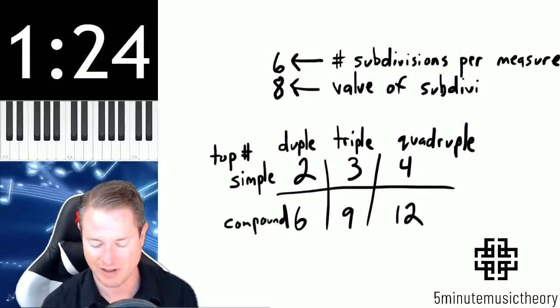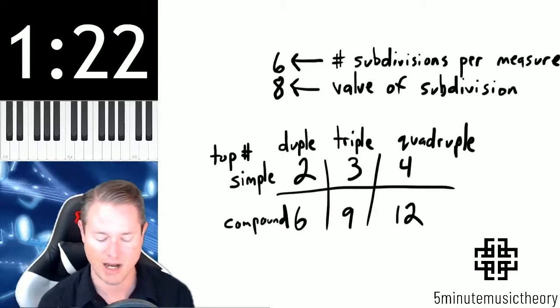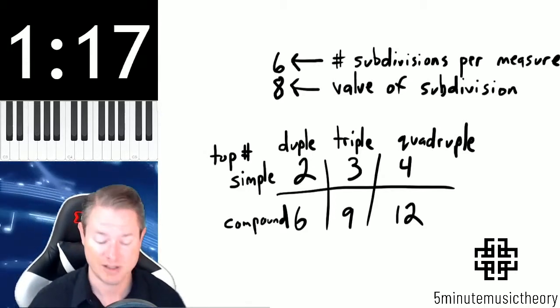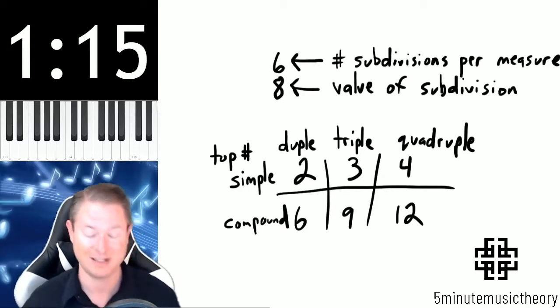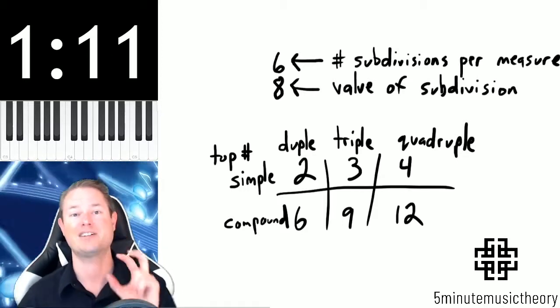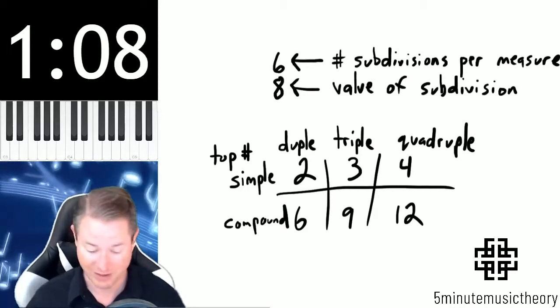Now something that is very commonly mistaken about compound meter, and in fact I see a lot of even professional musicians make this mistake in thinking that something that's in 6-8 time has 6 beats. It does not have 6 beats. It has 2 beats, which can be broken into 3 parts.